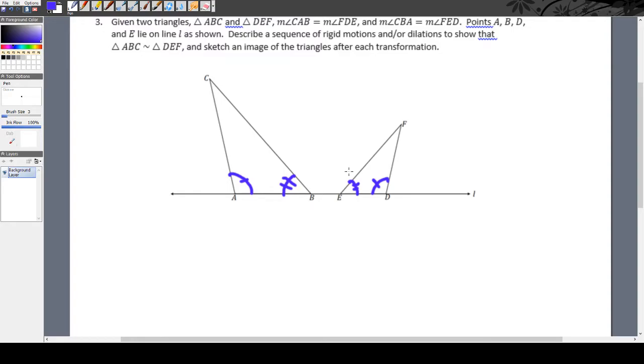Points A, B, D, and E lie on line L. Describe the sequence of rigid motions and dilations to show that ABC is similar to DEF, and sketch an image of the triangles after each transformation.